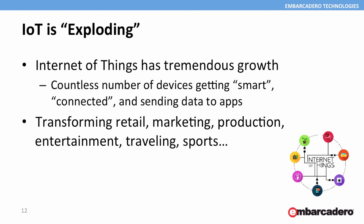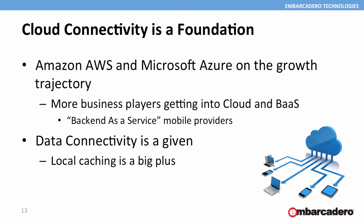But that's not the only trend. Windows 10 is key, mobile is key, but Internet of Things and smart devices are exploding and starting to transform businesses. They have a direct impact on business, which is extremely relevant in many — probably most — business areas: retail, marketing, production, entertainment, traveling, sports, and many more IoT scenarios. And without forgetting things we now almost take for granted, like cloud connectivity, multi-tier development, smart local caching, and many other trends of the past few years.